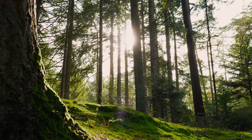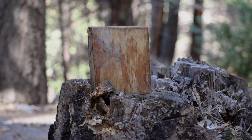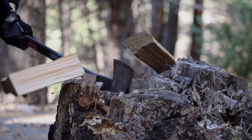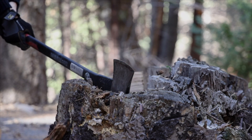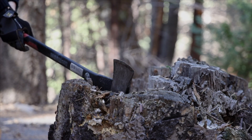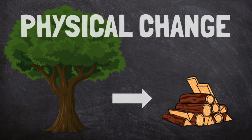Wood comes from trees. To get firewood, you cut down a tree, then you chop the tree into smaller pieces to make firewood. This is an example of a physical change to the wood. It started as a tree and now it is a pile of small pieces called firewood. But it is still wood — the material has not changed.